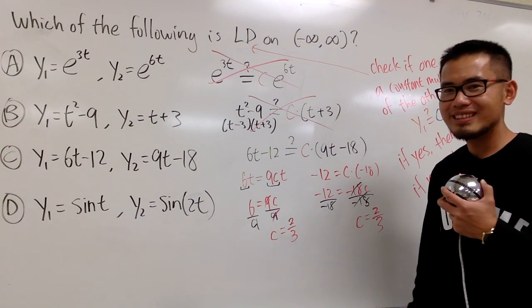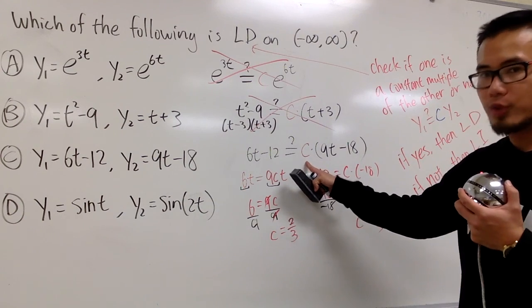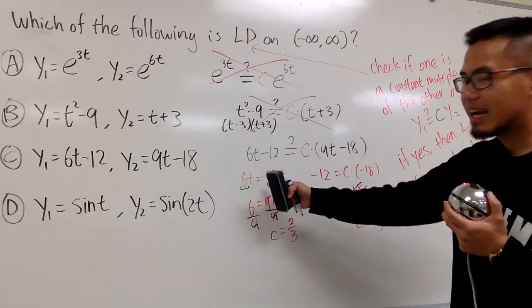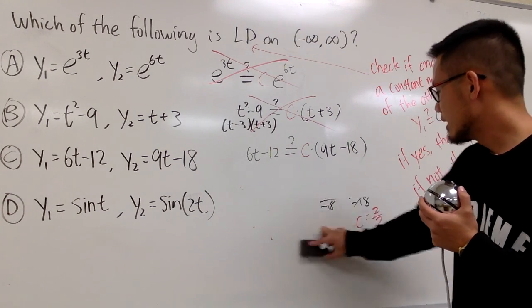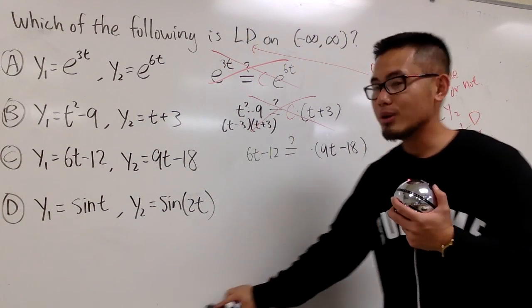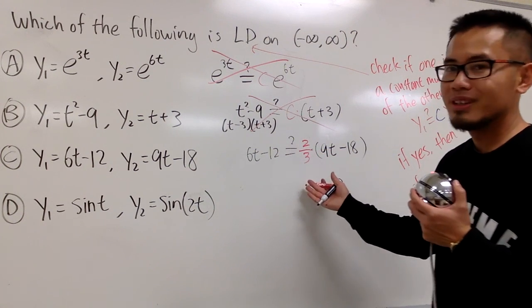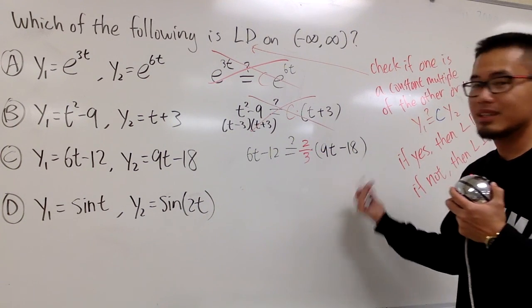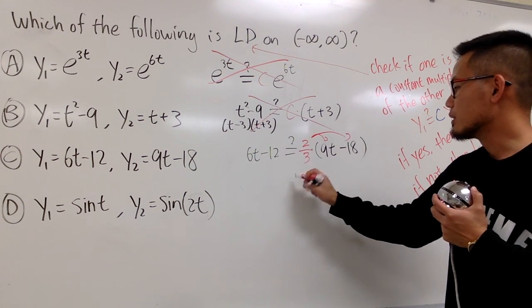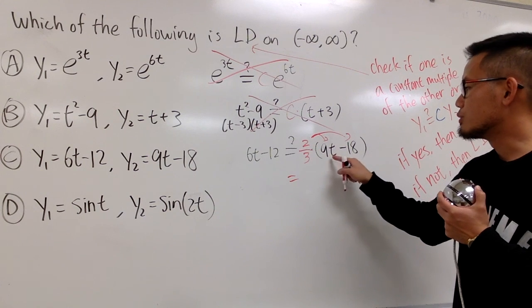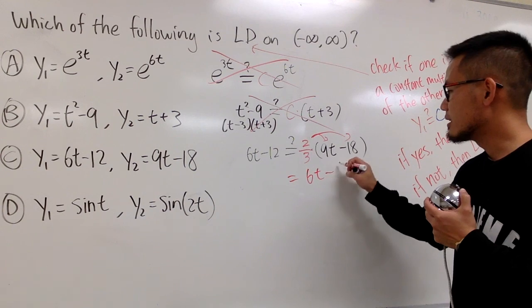just like how we did it over here. However, in another word, if I pick my c value to be 2 over 3, the left-hand side will be the same as the right-hand side. So, as you guys can see the computation already, I'm just going to erase this, and I'm going to erase this c now, because I can show you, I found a constant, and that will be, you know, that can make this equation true. So, if I put down c to be 2 over 3, once I distribute it, you will notice that 2 over 3 times 3t is exactly 6t.